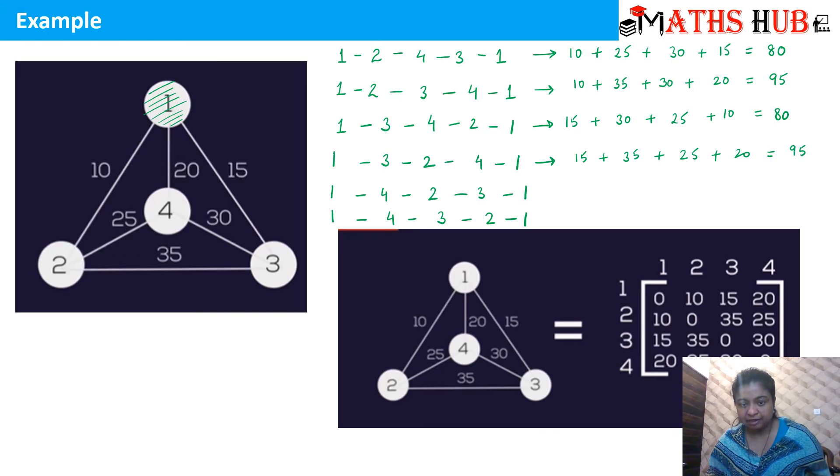Let us come to the next path. 1 to 4 is 20. 4 to 2 is 25. 2 to 3 is 35. 3 to 1 is 15. So this comes out to be 35 plus 15 is 50. 50 plus 25 is 75. 75 plus 20 is 95... wait, 40 plus 25 is 65. 65 plus 20 is 85.